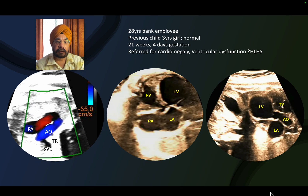This is a 28-year-old lady, a bank employee. Her previous child, about three years old, was normal. This time she comes for a fetal echo at 20 weeks of gestation. The reason for referral was cardiomegaly and ventricular dysfunction, and somebody thought that this is a hypoplastic left heart syndrome. Let's go through the case one by one.